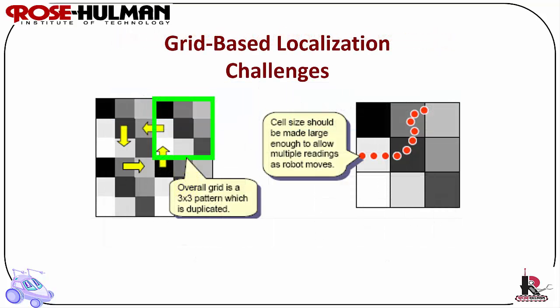Grid-based localization challenges: the advantages are you can reconfirm the location after short distances, eliminate errors within one cell range, and it's simple to implement. The disadvantages are that cell size limits accuracy, it requires many sensor readings and large cells for reliable estimation, it requires modification of the environment, and the results depend on print quality as well as sensor calibration.